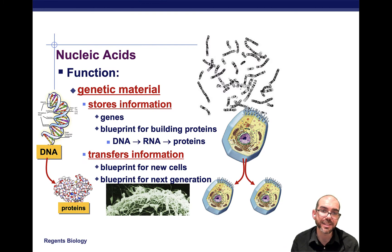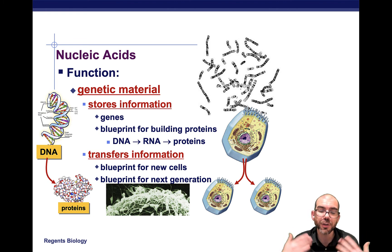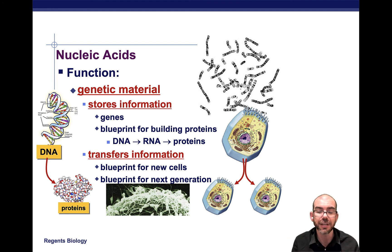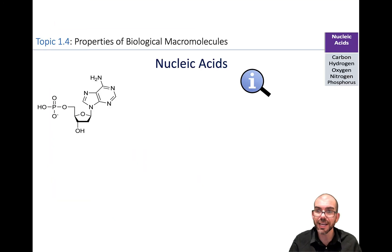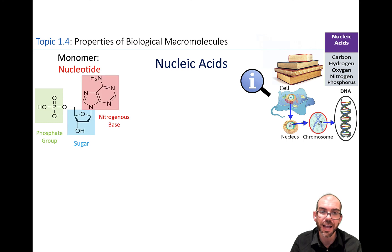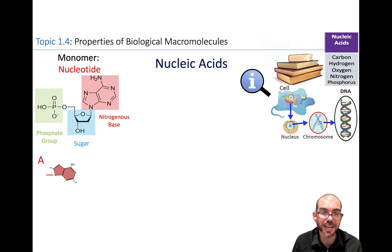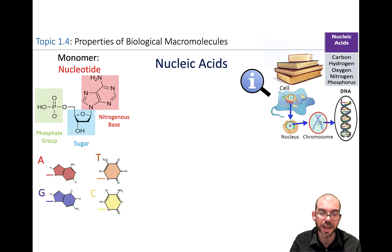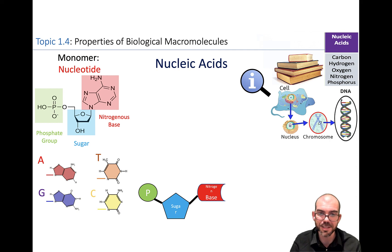Let's review nucleic acids. As we saw from all these experiments, nucleic acids are the genetic material that stores information for the cell. This is where we find genes — sections of DNA that code for protein — and the information transferred from generation to generation. A nucleic acid is made of carbon, hydrogen, oxygen, nitrogen, and phosphorus. Its monomer is a nucleotide, which has three parts: a phosphate group, a sugar, and a nitrogenous base. The nitrogenous bases vary between DNA and RNA; in DNA, the four are adenine, thymine, guanine, and cytosine.